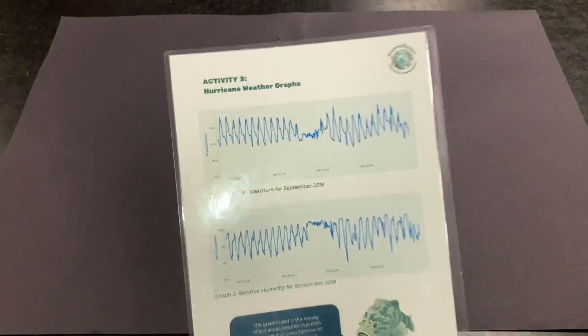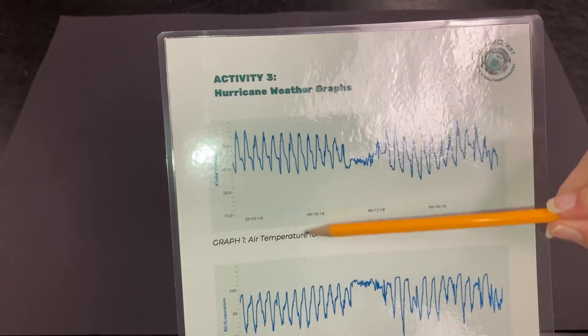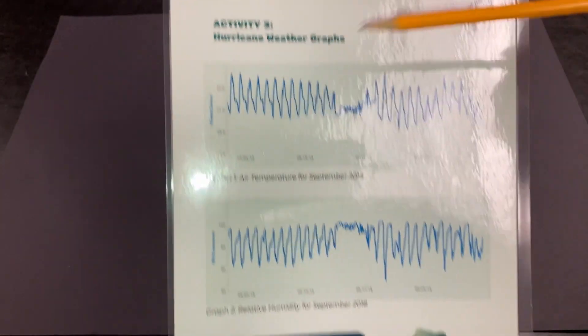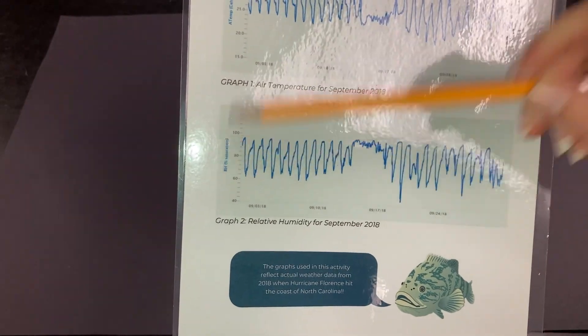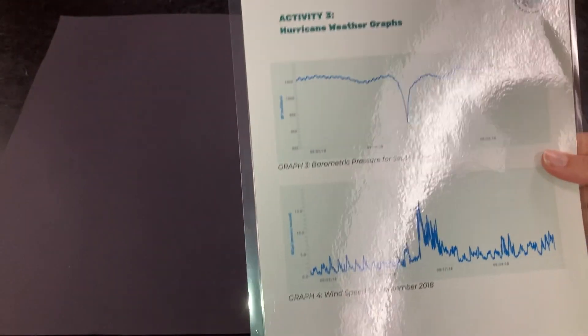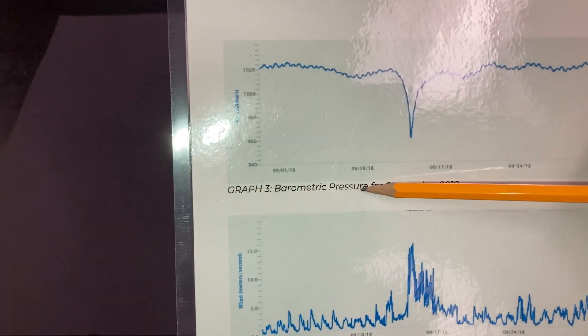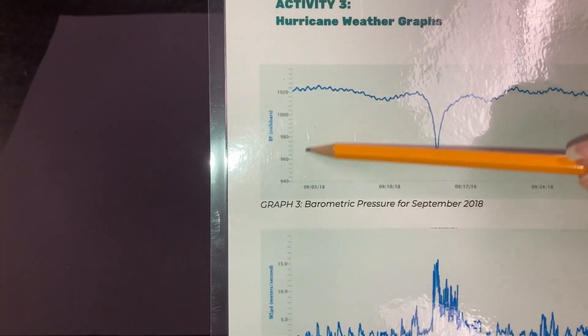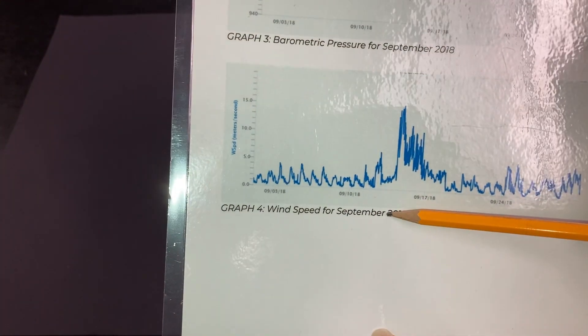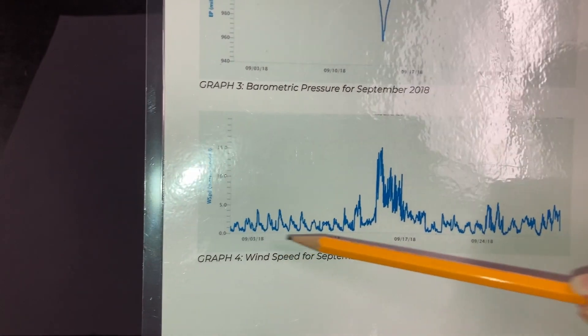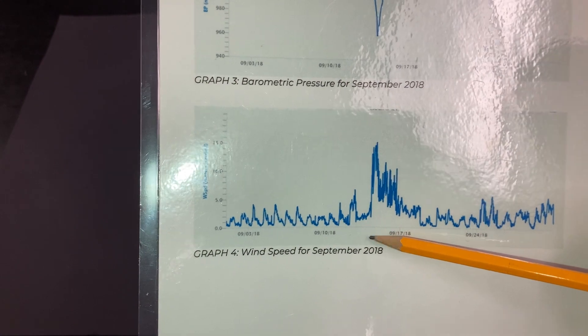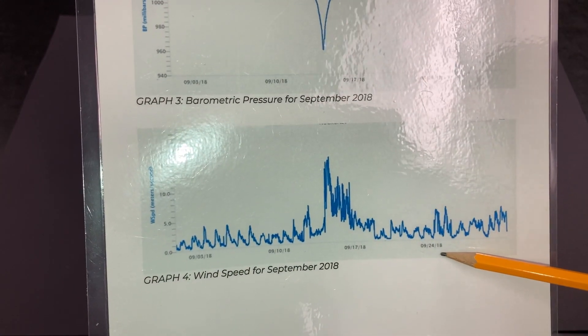Look at the weather graphs from September 2018 and do your best to record the temperature, relative humidity, barometric pressure, and wind speed on your data table. Determine these parameters for September 3rd, September 14th, and September 24th.